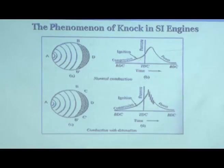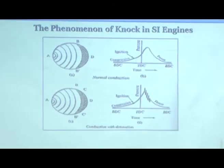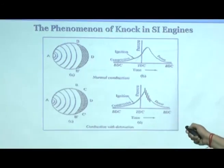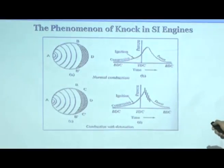The flame front compresses the unburnt charge, raising its pressure and temperature. Suppose the flame front has reached a certain point and the remaining unburnt charge has reached auto-ignition temperature. For knocking to occur, the auto-ignition temperature being reached is not enough — the delay period must also elapse. During the delay period, if the flame front is able to advance and reach the end of the combustion chamber (point D), there will be no charge left to auto-ignite, leading to normal combustion and a smooth P-theta diagram.